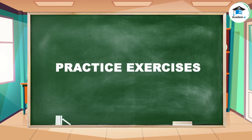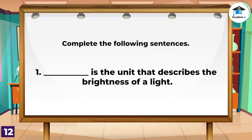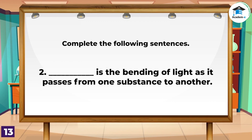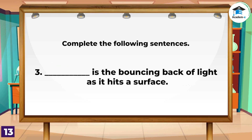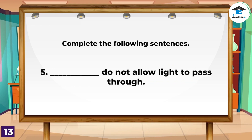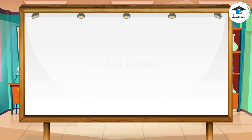To check how well you understood the lesson, let us have a short exercise. Complete the following sentences: 1. Candela is the unit that describes the brightness of a light. 2. Refraction is the bending of light as it passes from one substance to another. 3. Reflection is the bouncing back of light as it hits a surface. 4. Light travels in a straight line. 5. Opaque materials do not allow light to pass through.